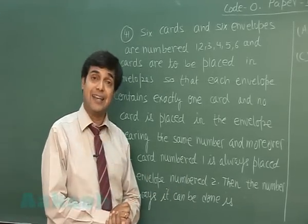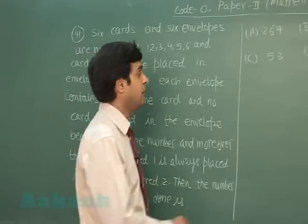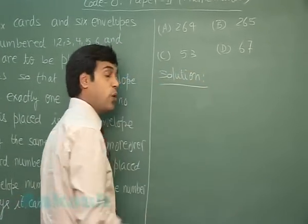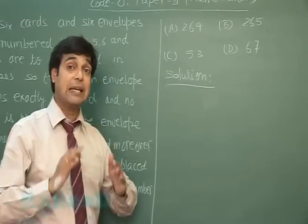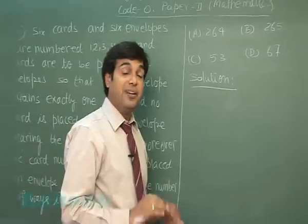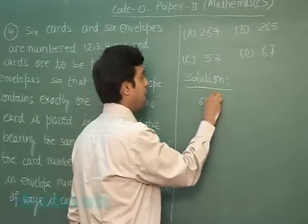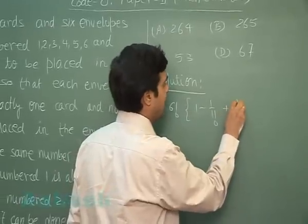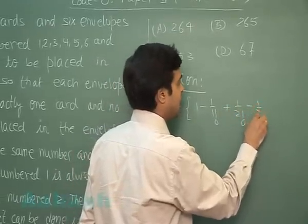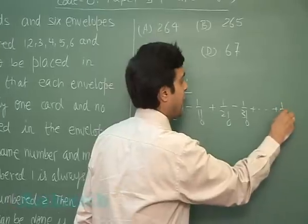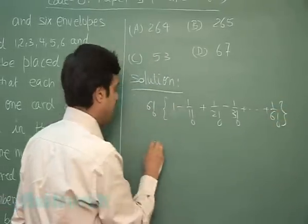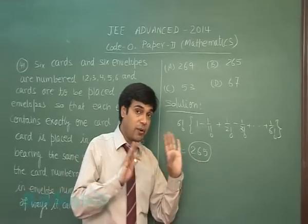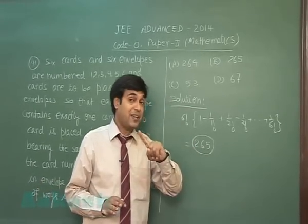A simple question from permutation combination. The required number of ways we can find using derangement. Derangement gives me factorial 6 multiplied with 1 minus 1 upon 1 factorial plus 1 upon 2 factorial minus 1 by 3 factorial and so on till 1 upon 6 factorial. Simplifying, we get 265.